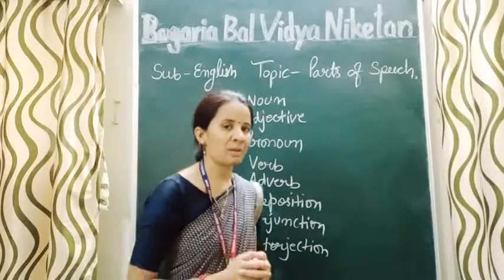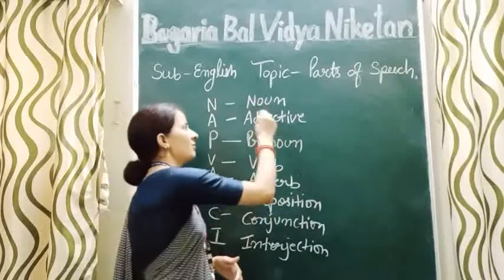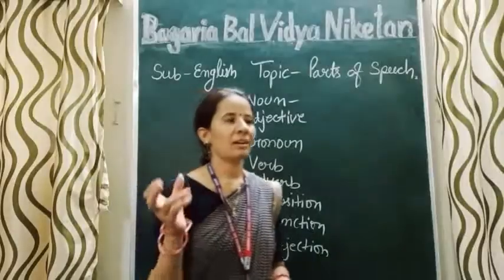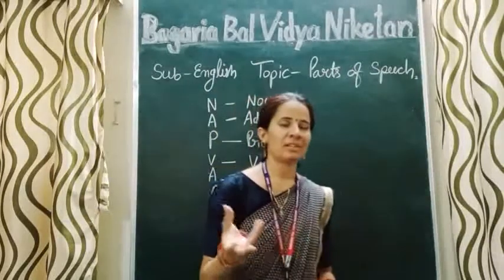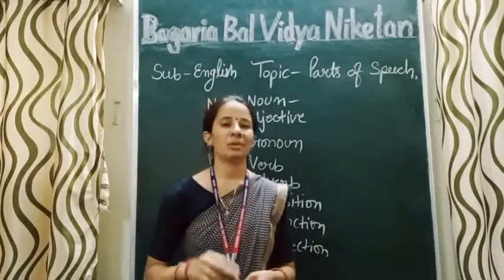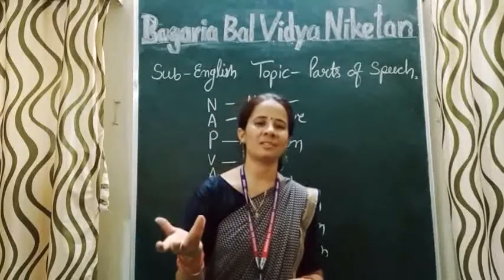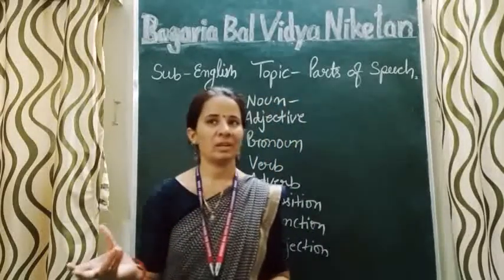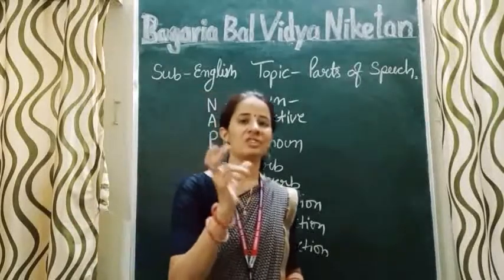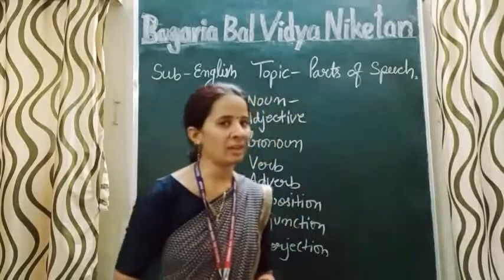Now I will explain all parts of speech one by one. Firstly, we take noun. What is noun? Noun includes names of animals, things like table, chair, eraser, water bottle — wo sab noun hai. We can also take places like Jaipur, Delhi, Kolkata — ye sab noun hai.